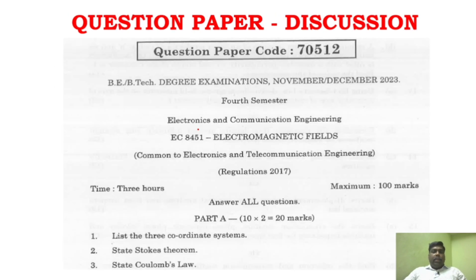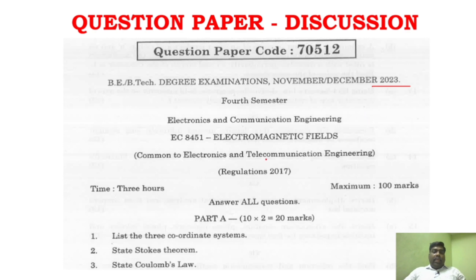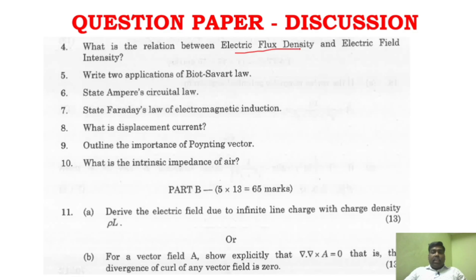Now we'll go to question paper discussion. We are going to see November/December 2023. As I said, go through the past papers. The 2017 regulation and 2021 regulation share 98-100% of the same syllabus. So if you look at the university question papers I've given, the 2-mark questions are direct. Definitely, 7 to 8 two-mark questions are sure shot. You can see: coordinate systems, Stokes' theorem, Coulomb's law, relationship between electric flux density and electric field intensity, applications of Biot-Savart law, Ampere's circuit law, Faraday's law, displacement current, importance of Poynting vector, and intrinsic impedance of air — all are direct questions.